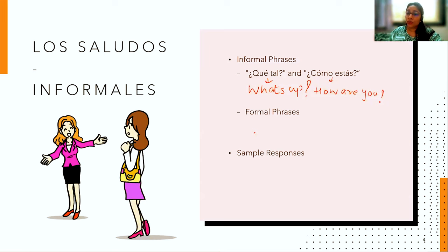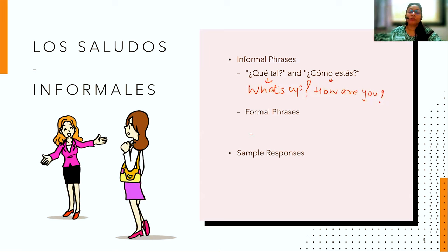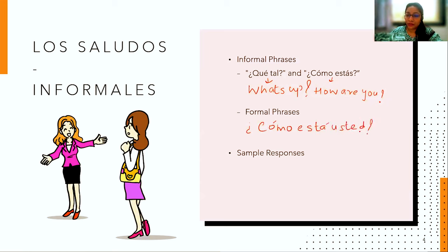Formal phrases are used with people who hold a title — for example, the principal of your school, your teachers — and with elder people or people you are meeting for the first time. With these groups, you stick to formal phrases. To say 'how are you' formally, you say 'cómo está usted' — three words: cómo, está, usted.